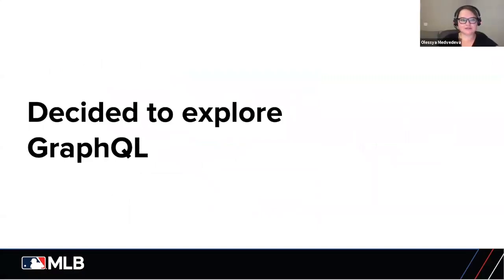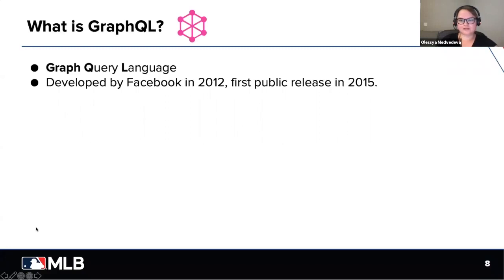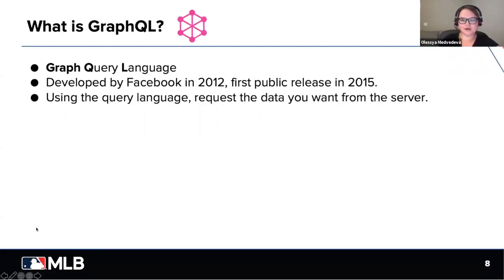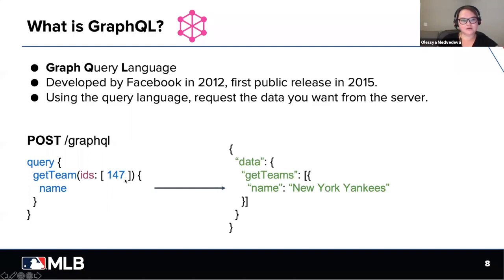To solve these issues, we decided to explore how GraphQL can play a role. GraphQL is a graph query language developed by Facebook in 2012, with the first public release in 2015. GraphQL uses a query language to request the data you want from the server. Queries sent to a GraphQL server are usually POST requests sent to a /graphql endpoint. In our example, we are asking the server to retrieve information about team 147 and only requesting its name. On response, we get team 147's name, which is New York Yankees.